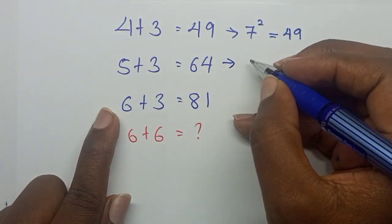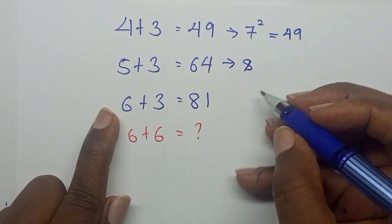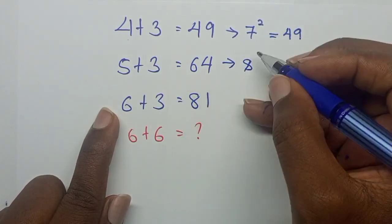5 plus 3 is actually 8. Now to get 64, they squared 8.